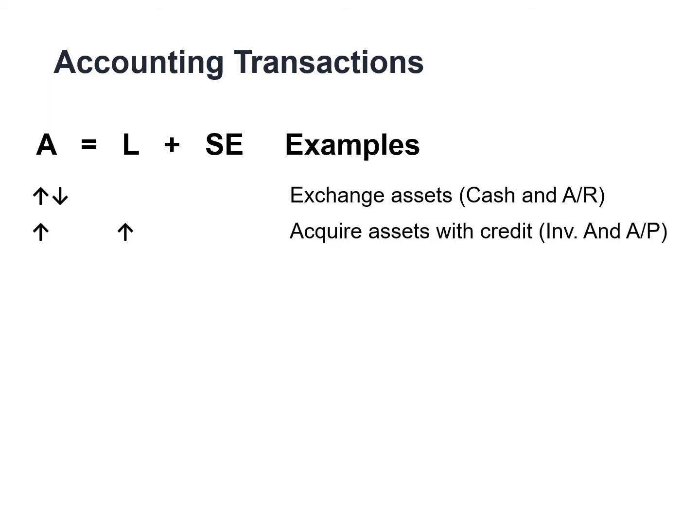Assets may go up because we've purchased assets on credit. In this example, both inventory and accounts payable increase. Or maybe the business obtained financing from a bank — in this instance, both cash and notes payable increase. A company may issue stock and receive cash, so cash is going up and stockholders' equity is going up.